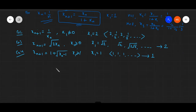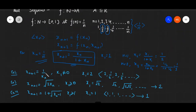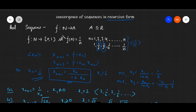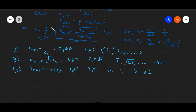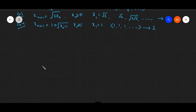Let us have a relook at what we have done so far. First we defined the sequence as a function from the set of natural numbers to a subset of the set of real numbers. Then we defined the recursive form of a sequence. Now let us come to the most important and most beautiful aspect, which is the geometrical aspect of the recursive form of sequences. Suppose we have x_{N+1} as a function of x_N, that is, a sequence in recursive form.